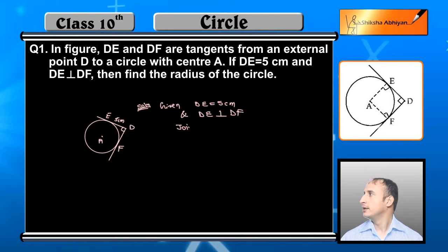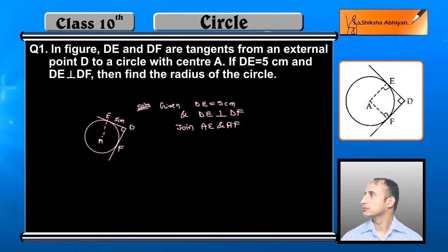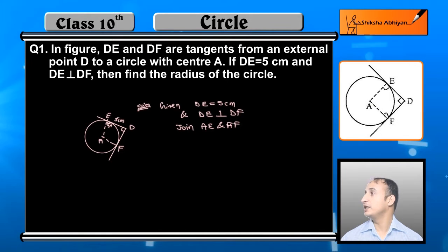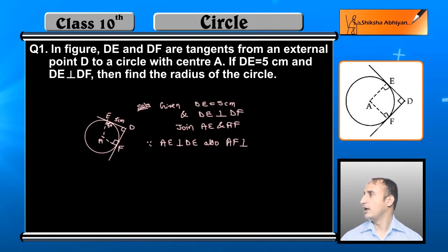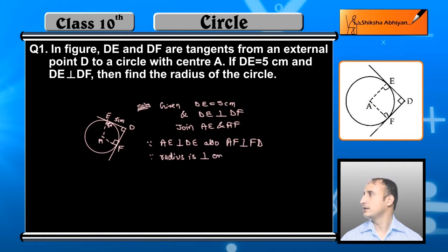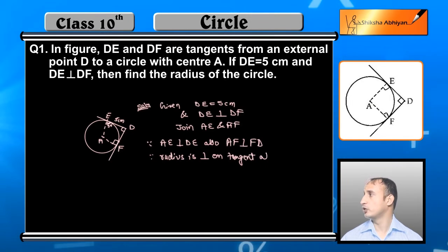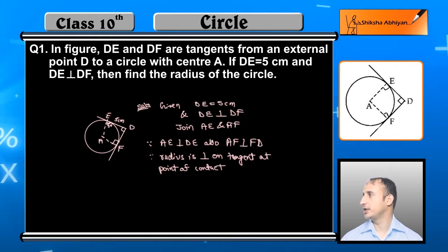Now join AE and AF. Since radius is perpendicular to the tangent at the point of contact — which we have seen and proved earlier — angle AED = 90° and similarly angle AFD = 90°. That is, AE is perpendicular to DE and AF is perpendicular to DF.